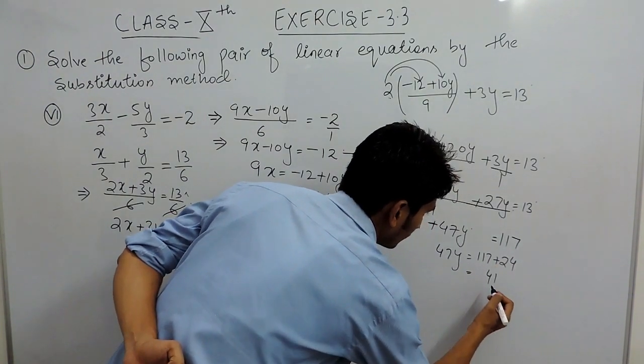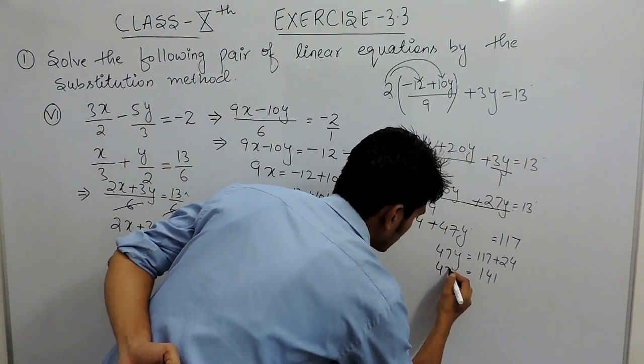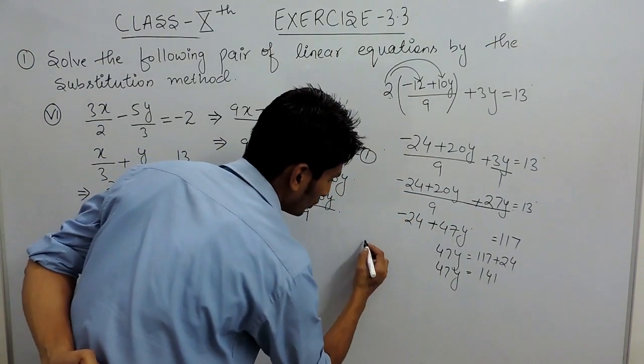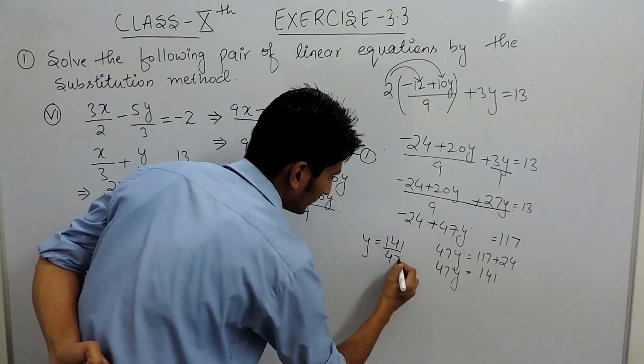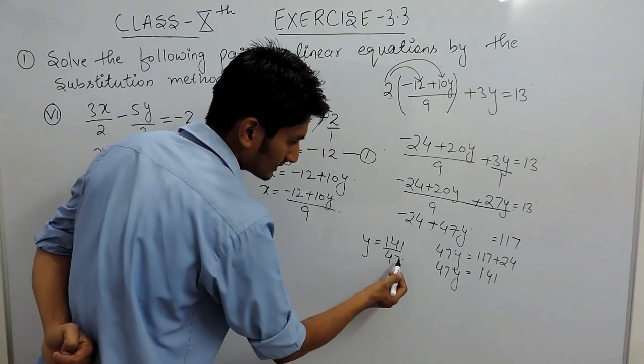This is 47y, and the value of y must be equal to 141 upon 47, so this can be cancelled 3 times